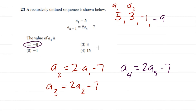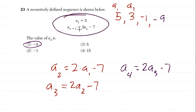Recursive sequences simply mean: to get the current term, look at a previous term and do something to it — double it and subtract something, for example. If you're not comfortable with the notation like a sub 4 and n equals 4, I'll put something in the description explaining sequences, because you definitely need to know these. They will pop up at least a couple of times on the exam.